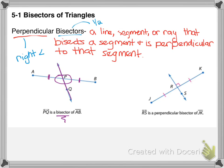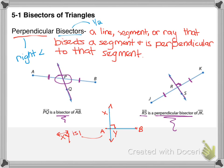If you look at line RS, you can see that it is perpendicular to JK and it also bisects JK — the congruent marks tell us that. So RS is a perpendicular bisector of JK. You could also have a case where two segments are perpendicular to one another but they don't bisect. Here, line XY is perpendicular, but it does not bisect. A perpendicular bisector must be both — it has to bisect and it has to be perpendicular.